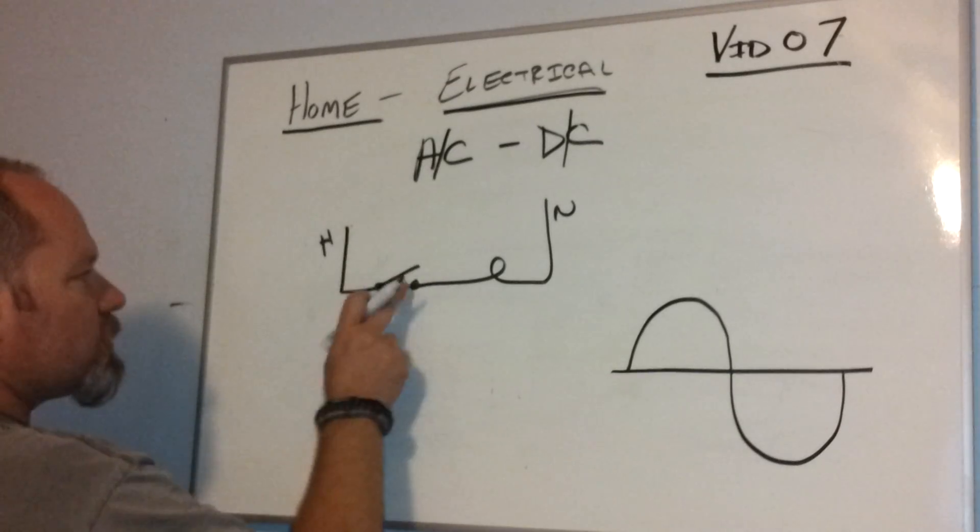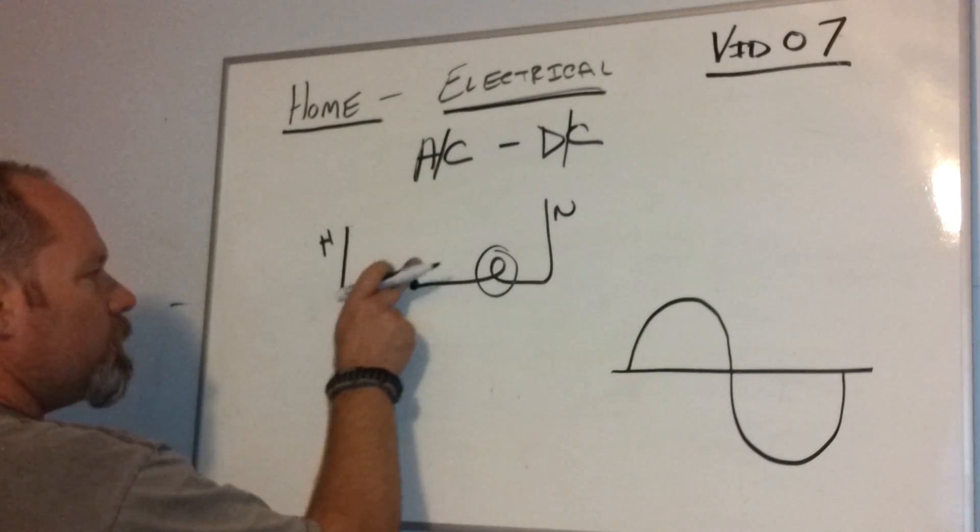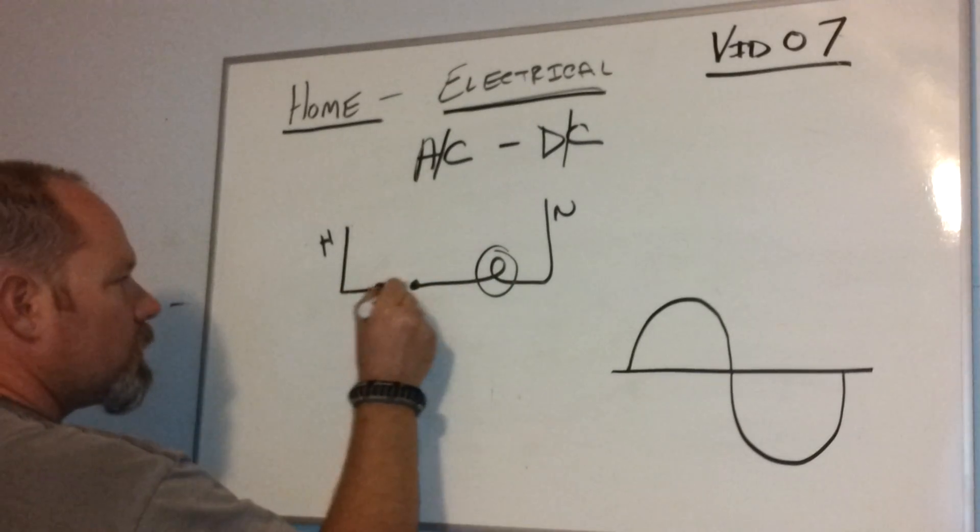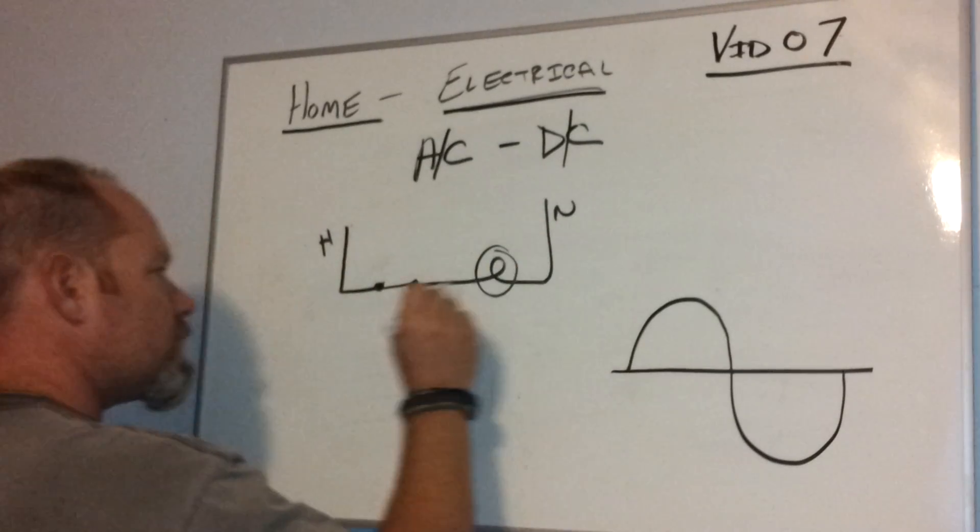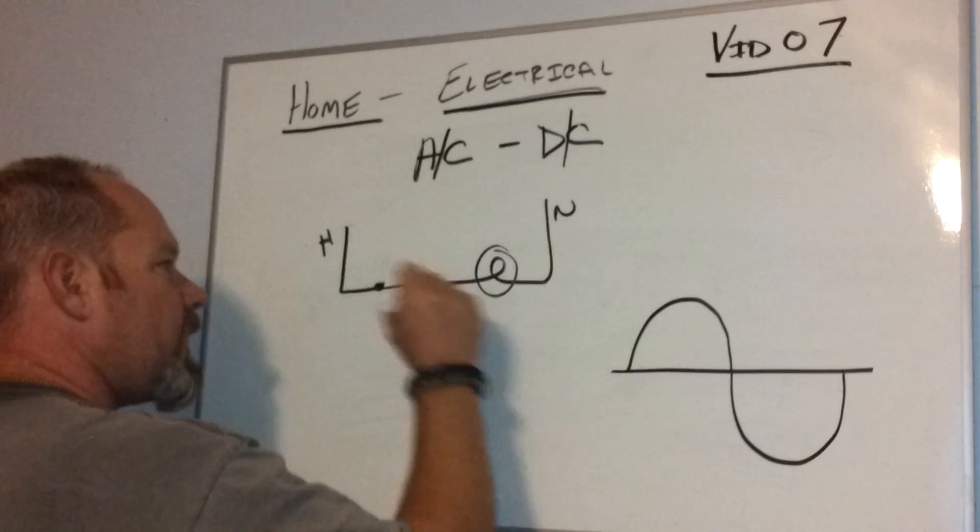When you make that switch, when you make this switch here, and electrons start to flow, electrons will flow this way, and they'll stop and come back, and they'll go back and forth.